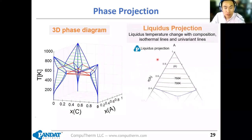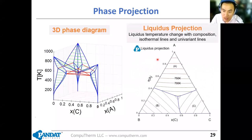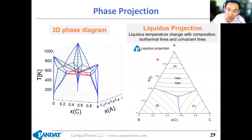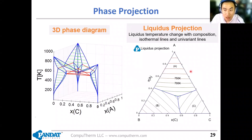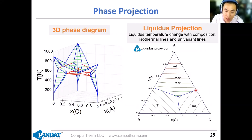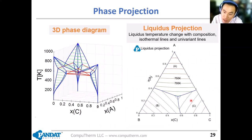For example, if you project this 3D diagram of liquid onto the 2D surface of this system, it will look like this. You can also see the temperature variant is represented by the isosolidus lines. This is a monovariant line and different phase regions. We will use a liquid projection of a real ternary system to explain more about its application.